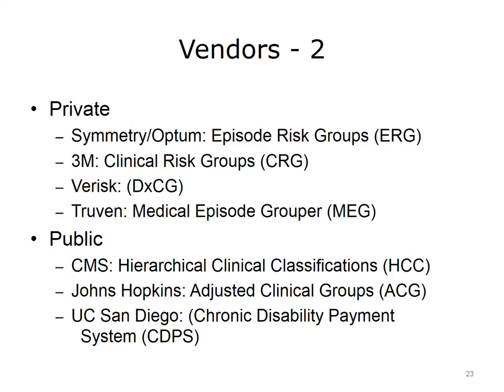Some of the larger private vendors of risk adjustment models include the Symmetry product from Optum, which calls its scores episode risk groups; the 3M company, which produces scores called clinical risk groups; Verisk, which produces risk scores given by the abbreviation DXCG; and Truven, which has a product called the Medical Episode Grouper. Some public entities have also created ways to adjust risk: CMS created the Hierarchical Clinical Classifications; Johns Hopkins University created the Adjusted Clinical Groups, or ACG; and the University of San Diego has maintained the Chronic Disability Payment System, or CDPS, targeted at the Medicaid population.